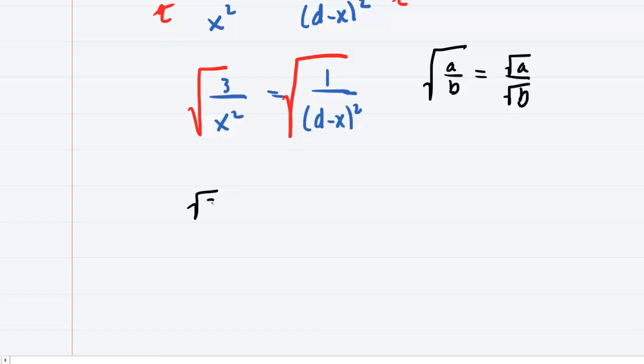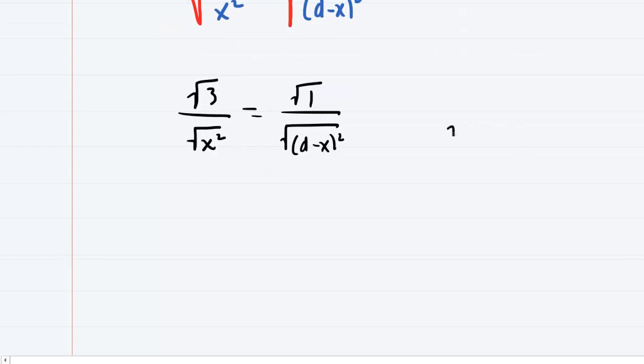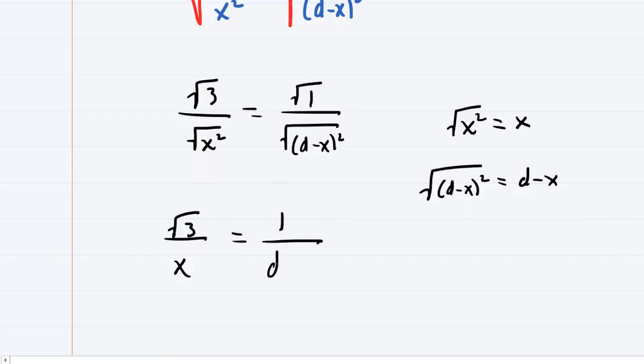So with that property in mind, we would have the square root of 3 over the square root of x squared equals the square root of 1 over the square root of d minus x squared. Now we also remember that the square root of x squared just can simplify to x. And similarly, the square root of d minus x squared is just d minus x. So now the equation becomes radical 3 over x equals 1 over d minus x.